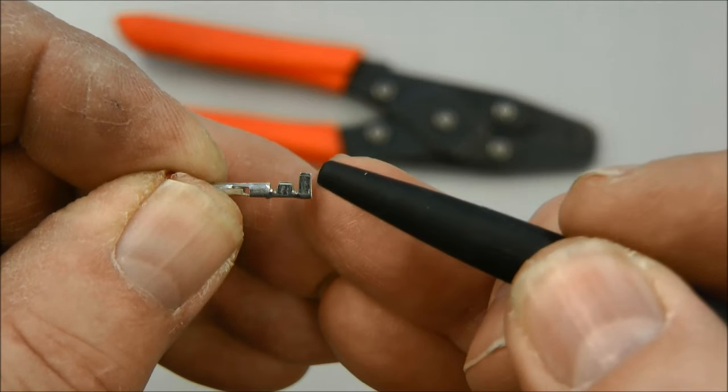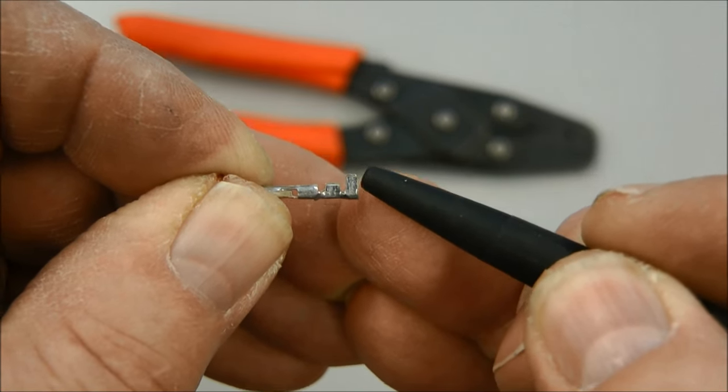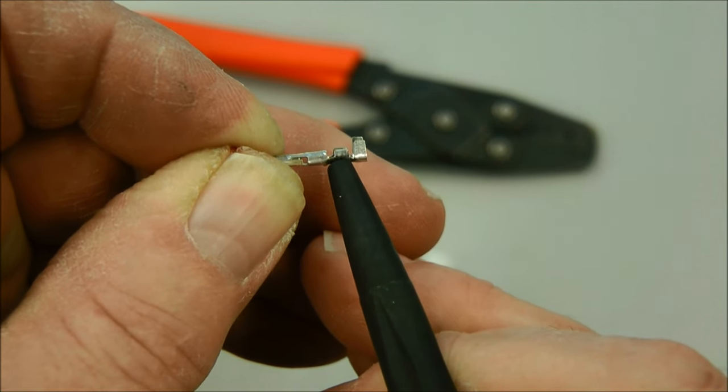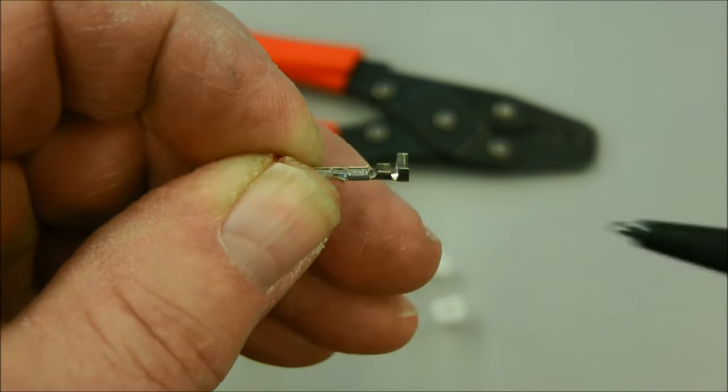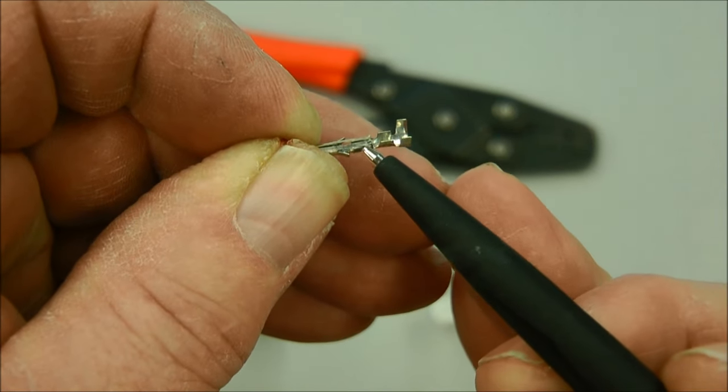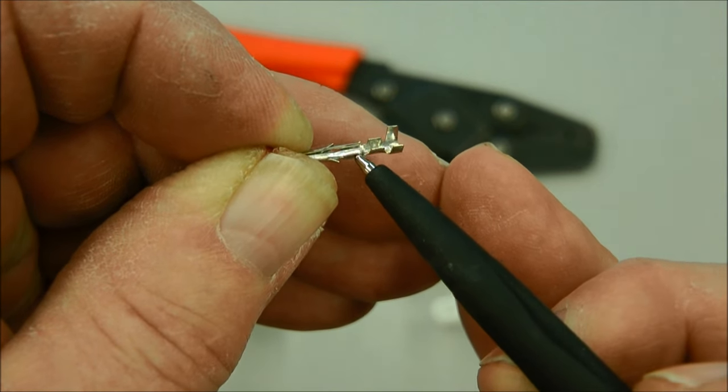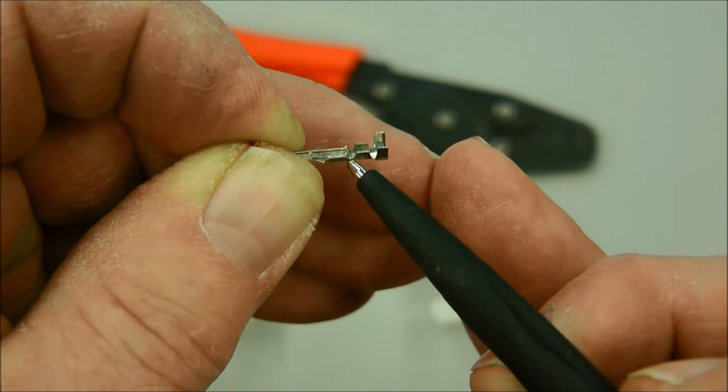This wing here is going to crimp around the insulation. This wing here is going to secure the wire, the bare wire. One thing is you do not want to get your crimper on this area of the pin or it will cause you trouble when you try to insert or remove the pin.